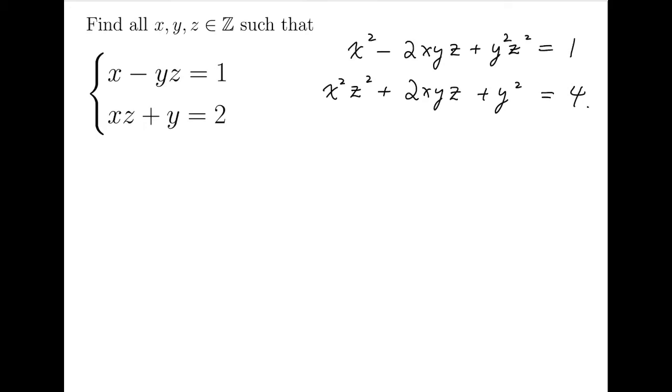Then from these equations, it seems the best way is to actually add them up and eliminate the xyz terms. Then the equation we have will be x squared plus y squared z squared plus x squared z squared plus y squared equals 5.